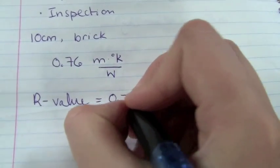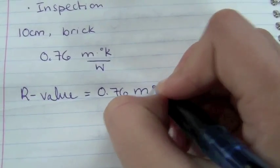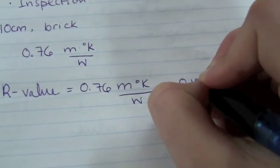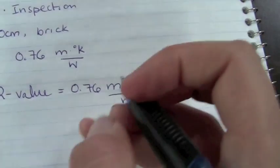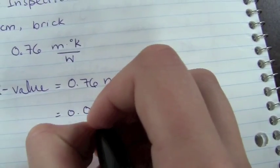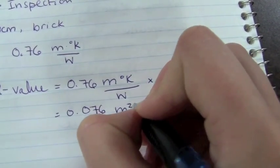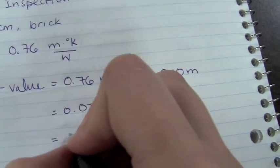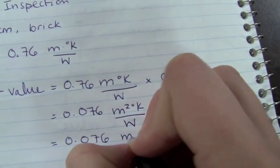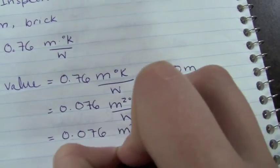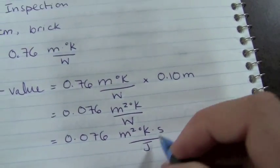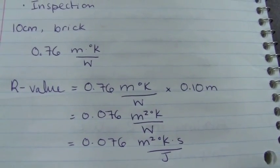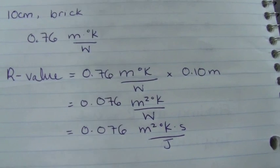So I'd have 0.76 meters times degrees Kelvin over watts multiplied by 0.10 meters. This gives me an R value of 0.076 meters squared degrees Kelvin times seconds over joules, seeing as a joule per second is simply a watt. These R values can be added together in the case where multiple materials are simply going to be together side by side.